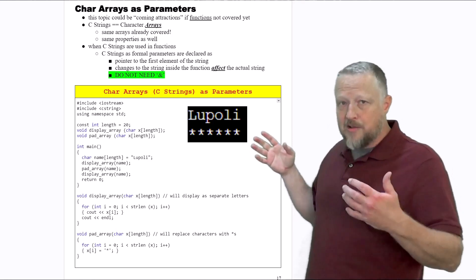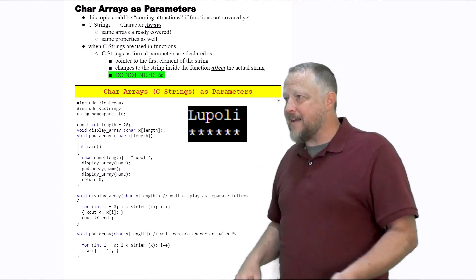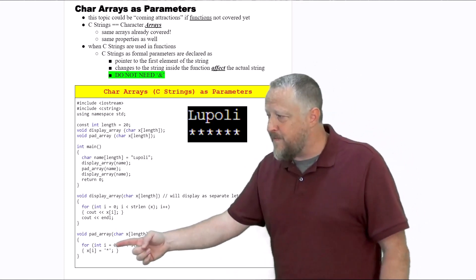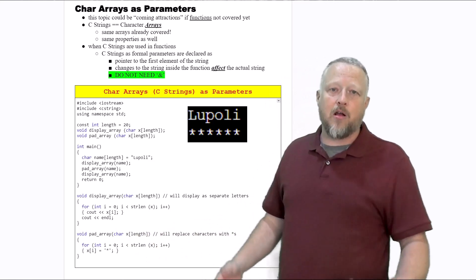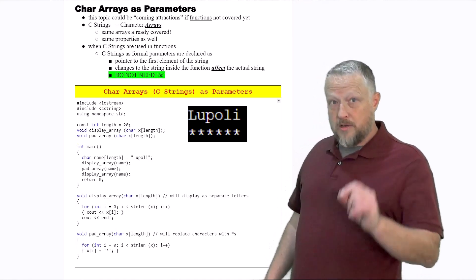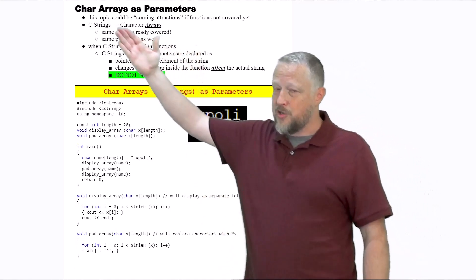And that string is now stuck with stars unless I strcat it, unless I strcpy it, or I individually set letters or characters in the array, character array, which is - again, you'll see character array, which equals my C string.